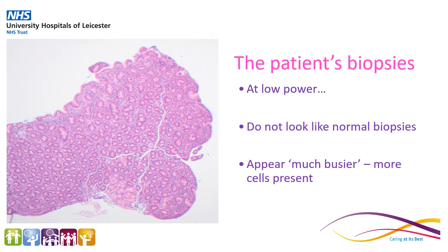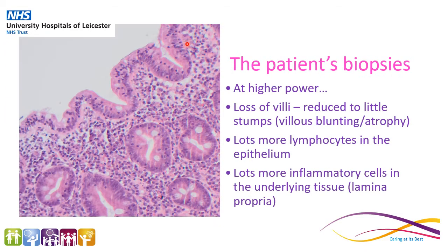This is a picture of the patient's duodenal biopsy, and at lower power we can see that it is not normal. The tissue is much busier, i.e. more cells present, than the normal tissue. And then if we look at this on higher power, one of the most striking features is we've lost those long villi — they've been reduced to these little stumps here. This is called villus blunting or villus atrophy. Also, we can see there are a lot more of the blue dots present in the epithelium, so a lot more lymphocytes present. And within the lamina propria, the underlying tissue, there are a lot more inflammatory cells present.